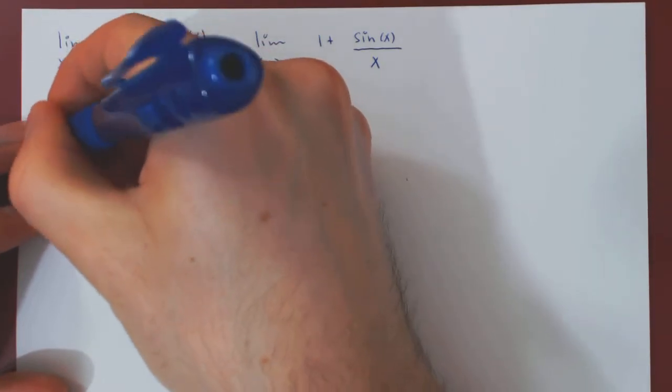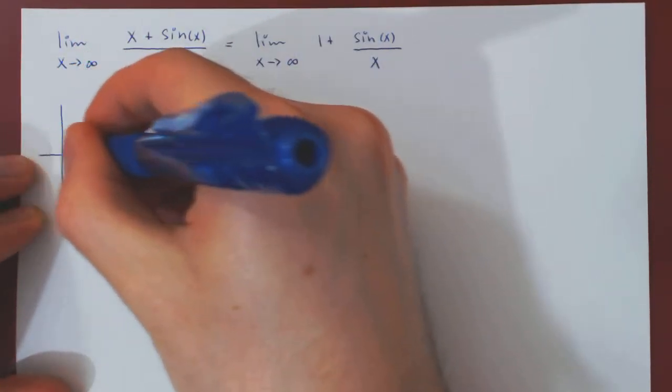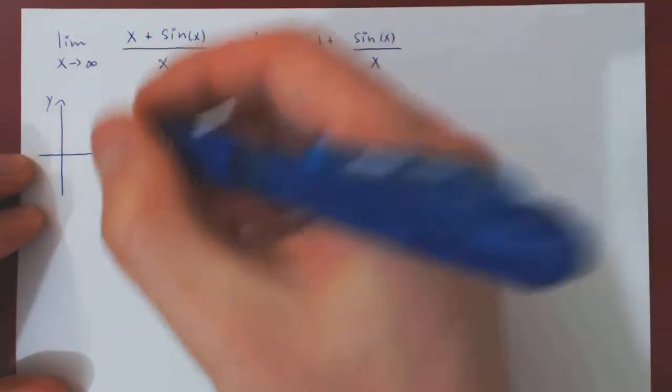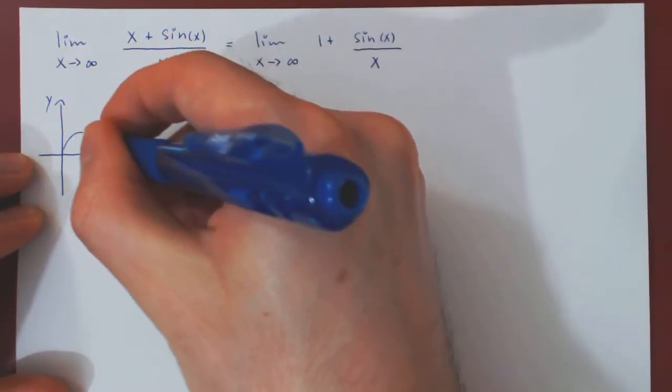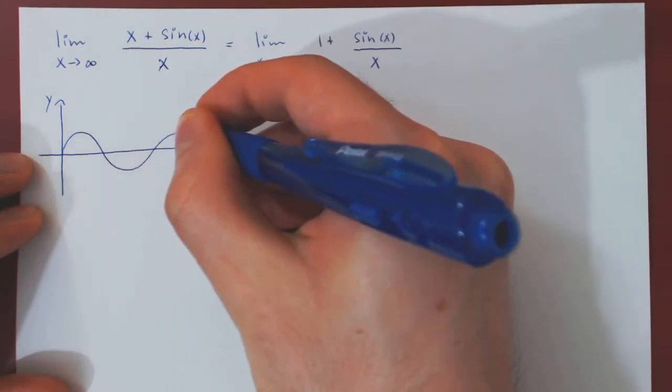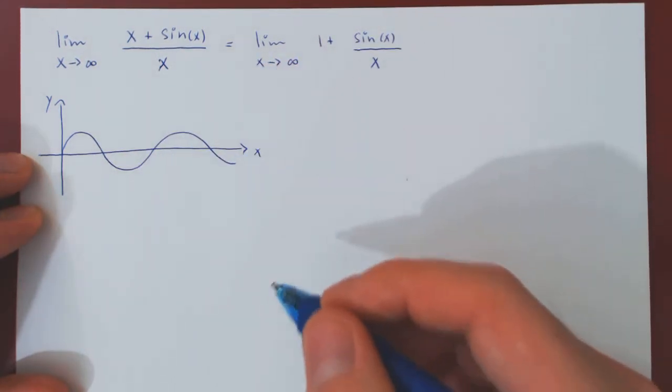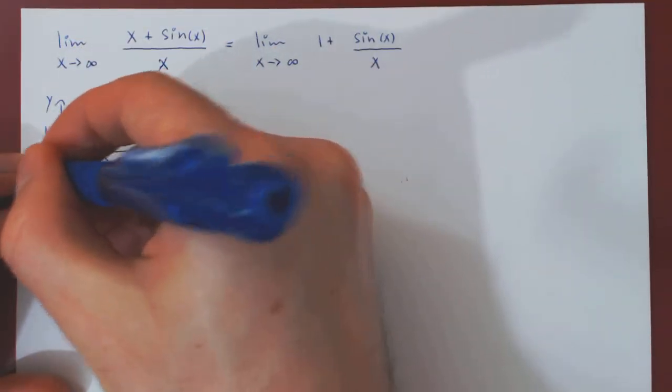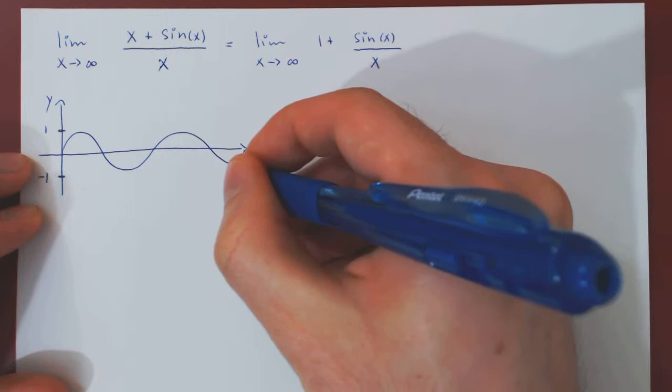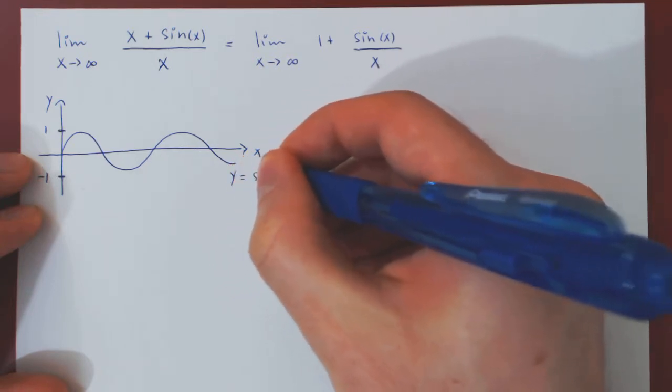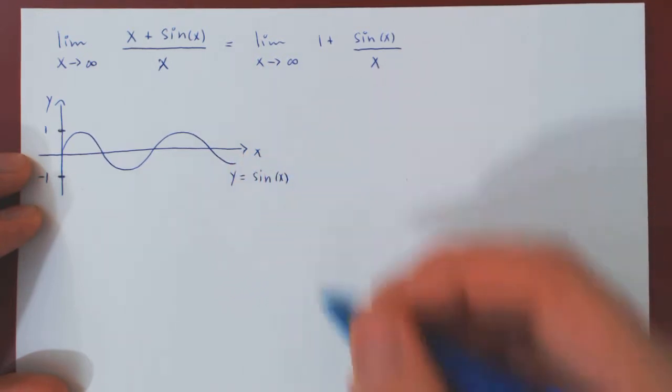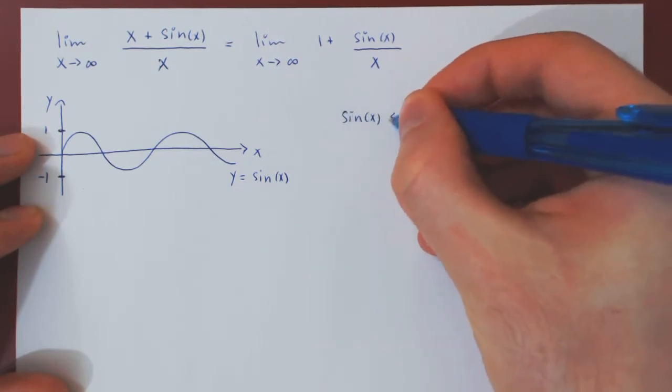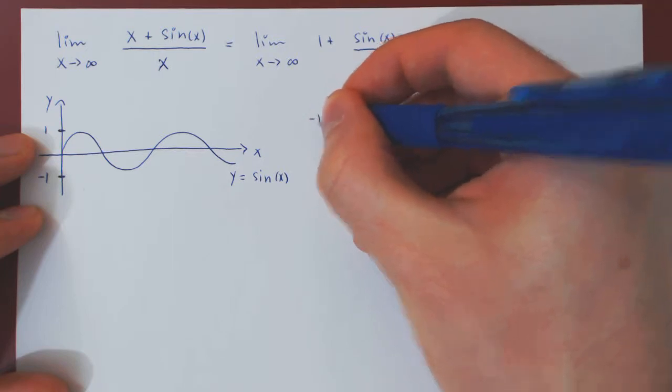Well, if you remember, sine of x is a very simple wave function. Sine of 0 is 0 and then you have a wave function that will oscillate forever between 1 and negative 1. So, for all values of x, sine of x is always between negative 1 and 1.